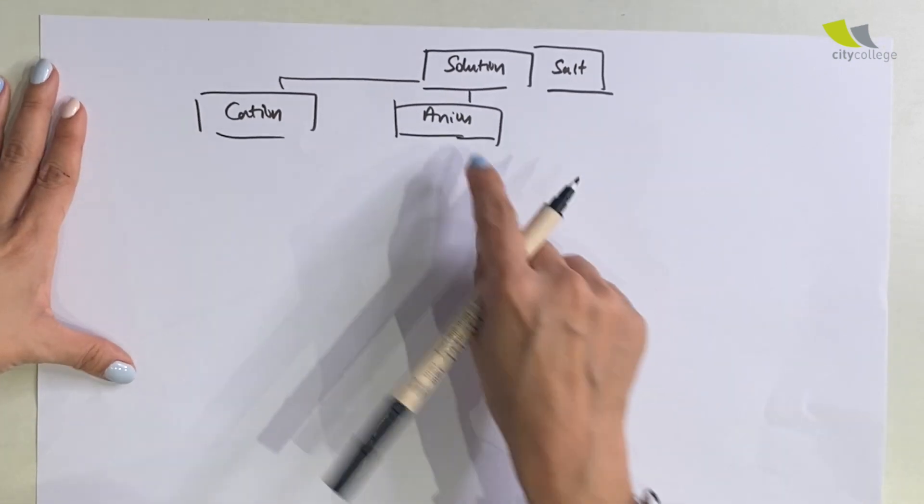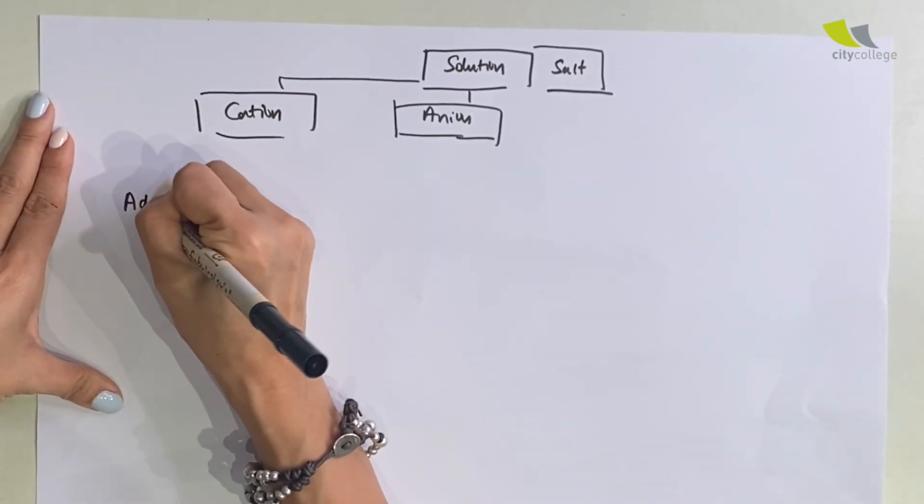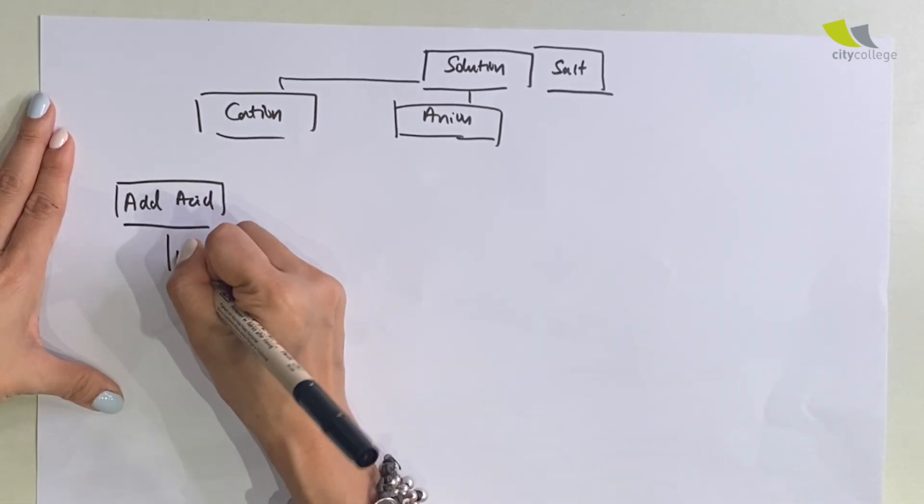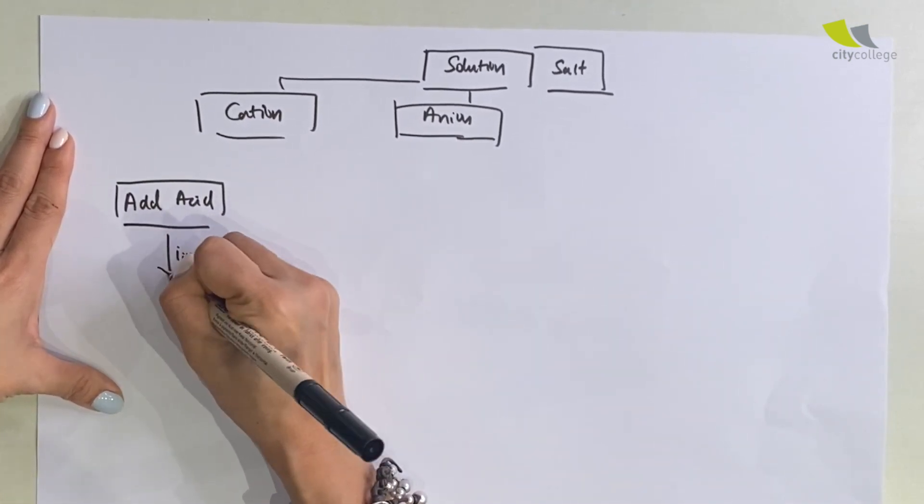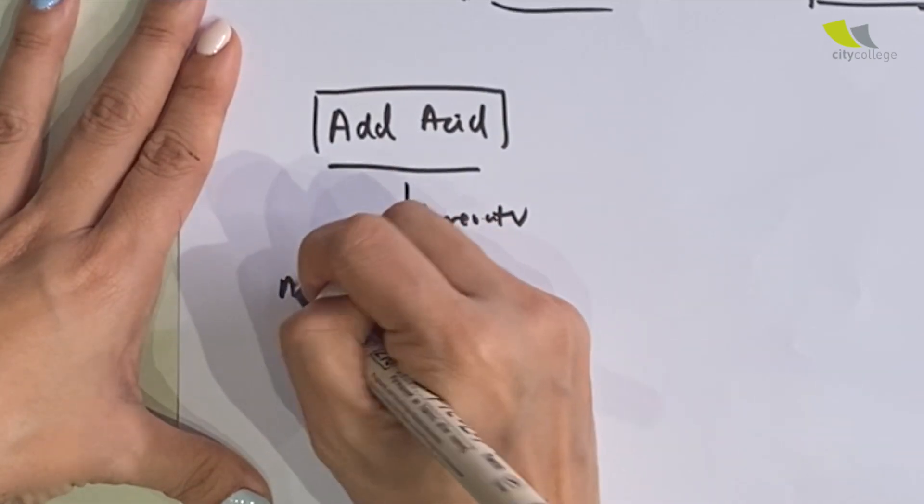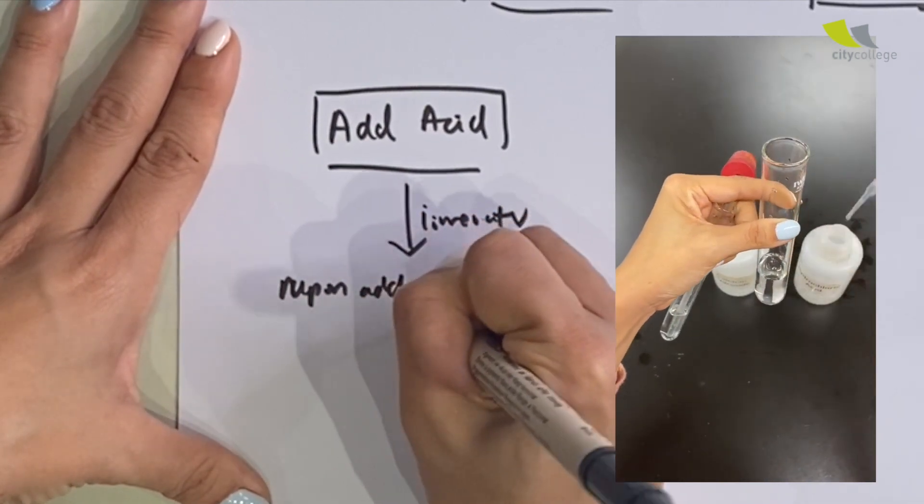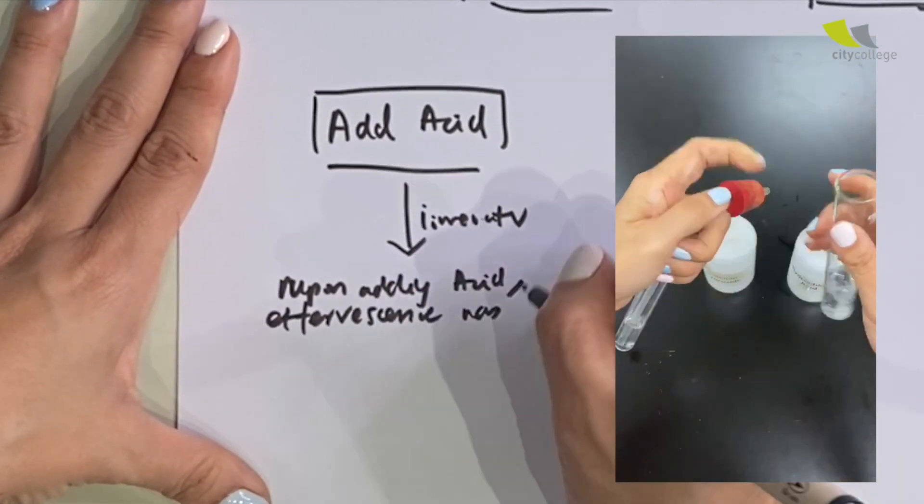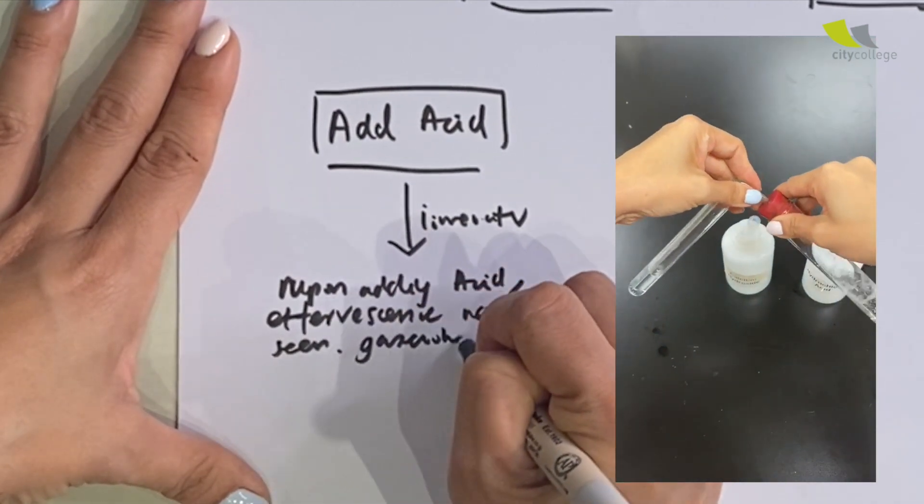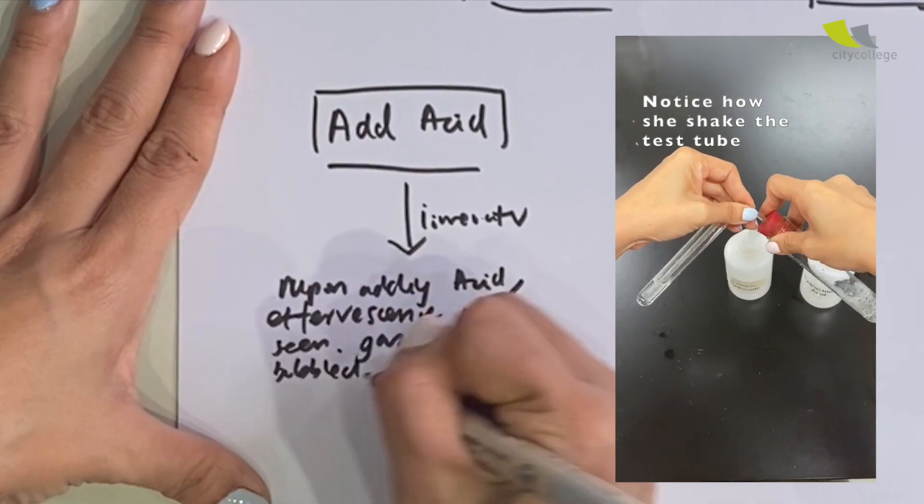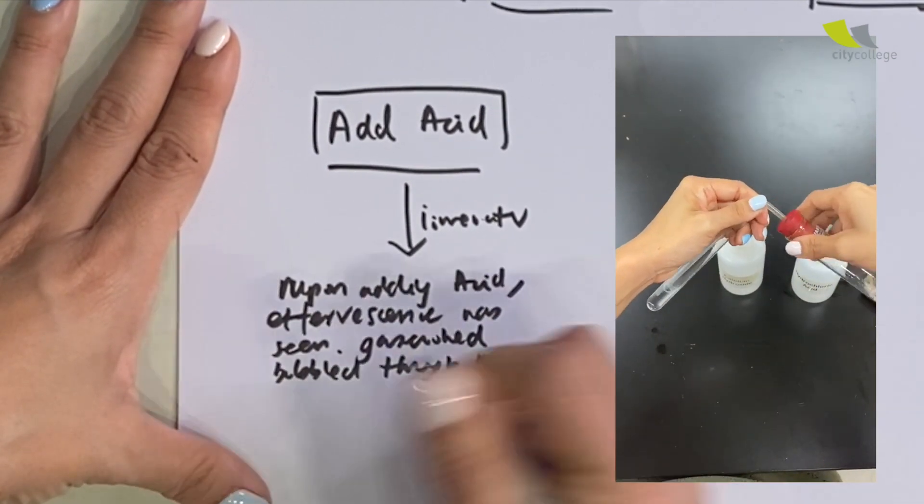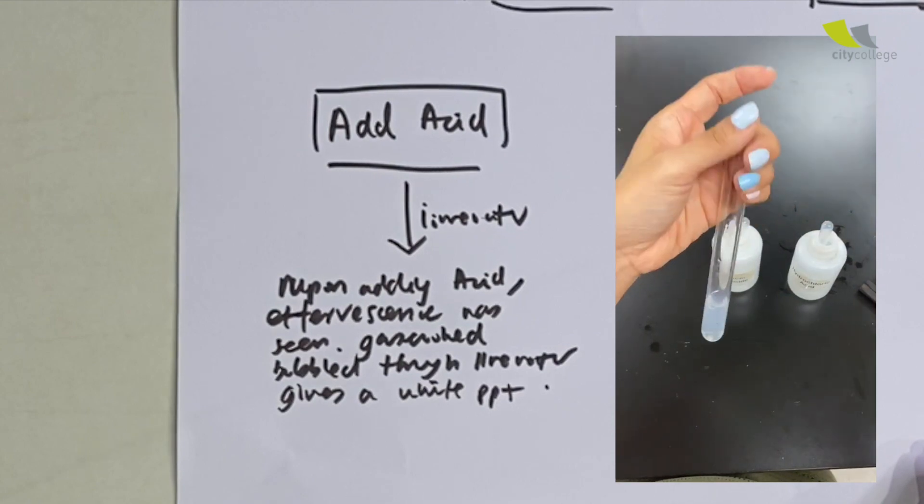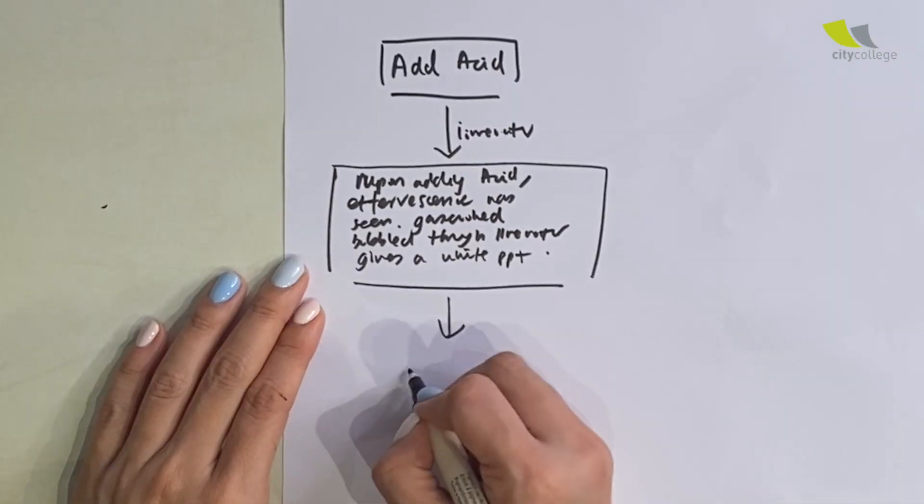And today our main focus is on the anion. Now one portion of the anion test is to add an acid, and after which we will test using a lime water. Most of the time you will see this: upon adding acid, effervescence was seen, gas evolved, bubble through lime water gives a white PPT. Therefore I can conclude carbonate is present.